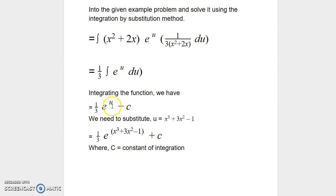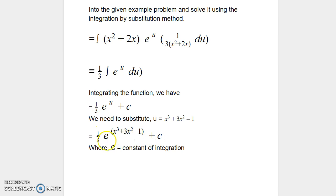Again, we want to express our answer in terms of x, not u. We started by letting u = x³ + 3x² − 1, so we replace u to get 1/3 e^(x³ + 3x² − 1) + c, where c is a constant of integration.